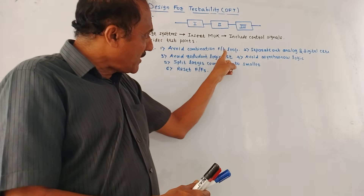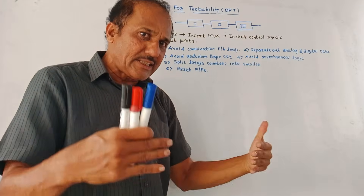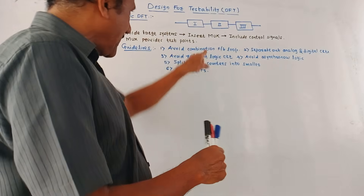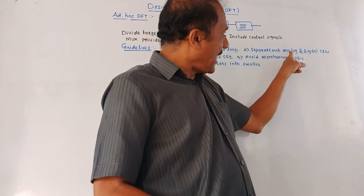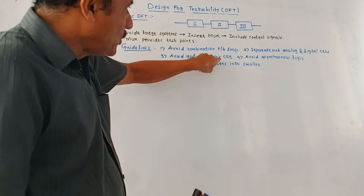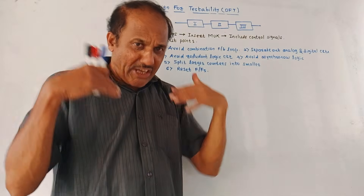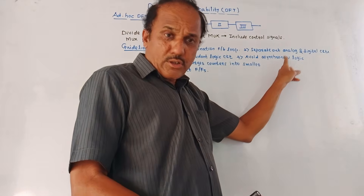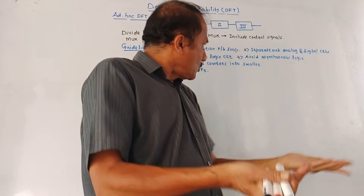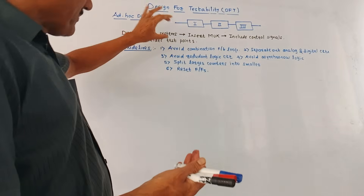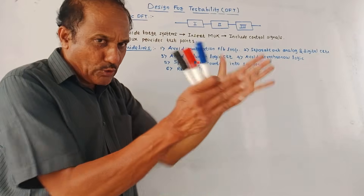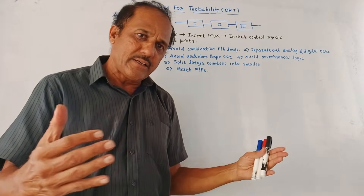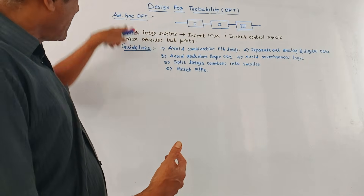The guidelines for ad-hoc DFT are as follows. Always avoid combinational feedback loops because it is easier to test sequential circuits rather than combinational circuits. Separate out the analog and digital parts of the circuit. Avoid redundant logic circuits — unnecessarily extra logical circuits should be removed. Avoid asynchronous logic and always prefer synchronous logic. Split larger counters into smaller ones, and reset all flip-flops used in the circuit by applying reset or clear signals. This is about ad-hoc DFT.